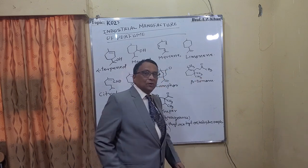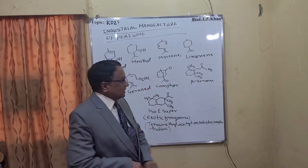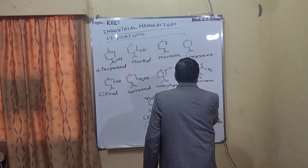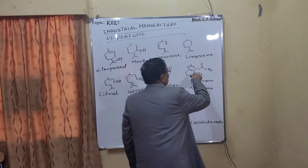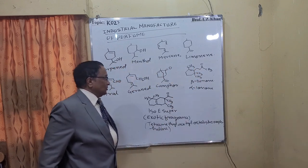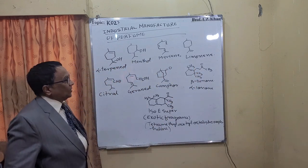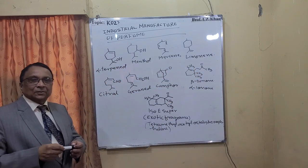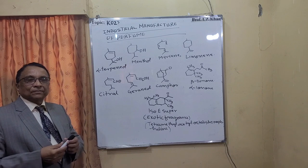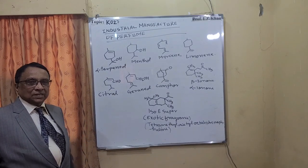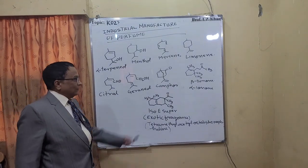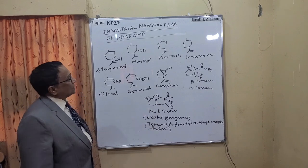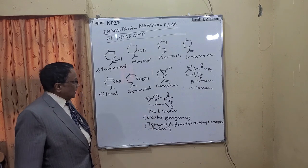It can be beta-ionone or also alpha-ionone, depending on the position of the double bond. When it is in the beta position it is called beta-ionone, which is related to vitamin A, and when it is in the alpha position it is called alpha-ionone — a very good compound.